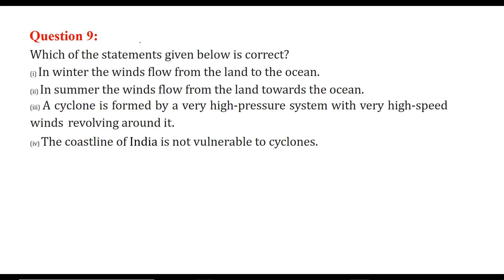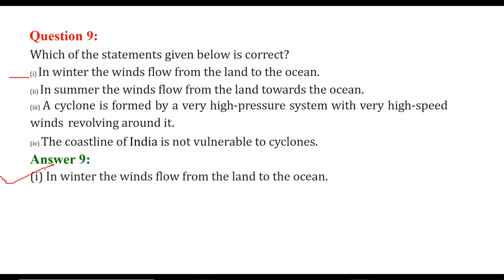Which of the following statements is correct? In winter, the wind flows from land to the ocean — and this is correct. In winter, wind actually flows from land to the ocean. These are the questions on winds, storms, and cyclones.